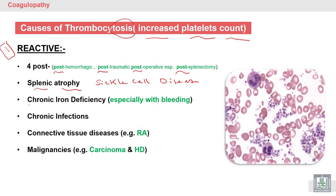Chronic iron deficiency, especially with bleeding, leads to thrombocytosis through increased platelet production. There is megakaryocyte stimulation to release more platelets in order to form a primary platelet plug and stop the bleeding.